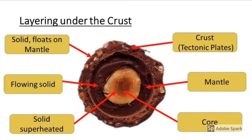To better understand tectonic concepts, we need to look at the layering of the earth under the crust. The crust is the layer we are standing on; it consists of all the tectonic plates — oceanic as well as continental. Below the solid crust is a mantle — a superheated flowing solid, not really in a liquid state. Digging deeper, you find a solid core at the center. Like a cross-section of a Ferrero Rocher: solid core innermost, a flowing solid mantle, topped off by the crust.